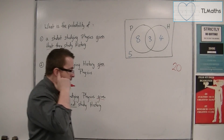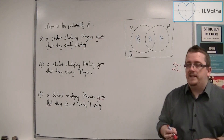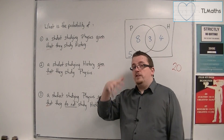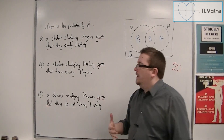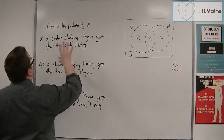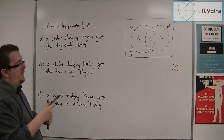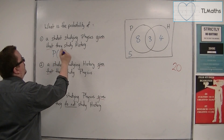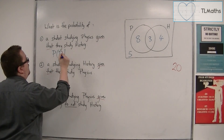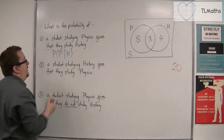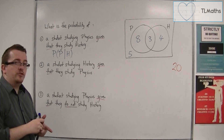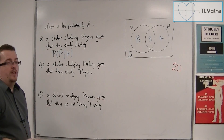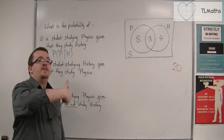This 'given that' idea is then formally introduced in notation. So for this one, a student studying physics given that they study history is written as P(P|H) — the probability of a student studying physics given that they study history. We use this straight vertical line between the P and the H to represent the words 'given that'.